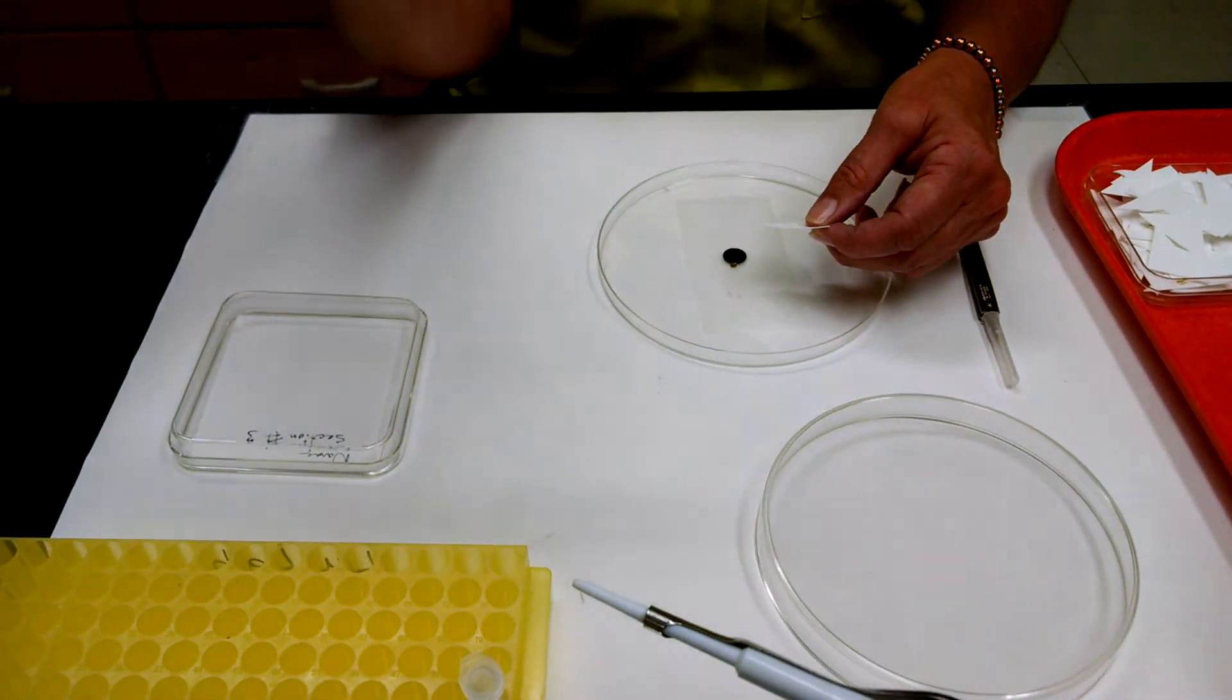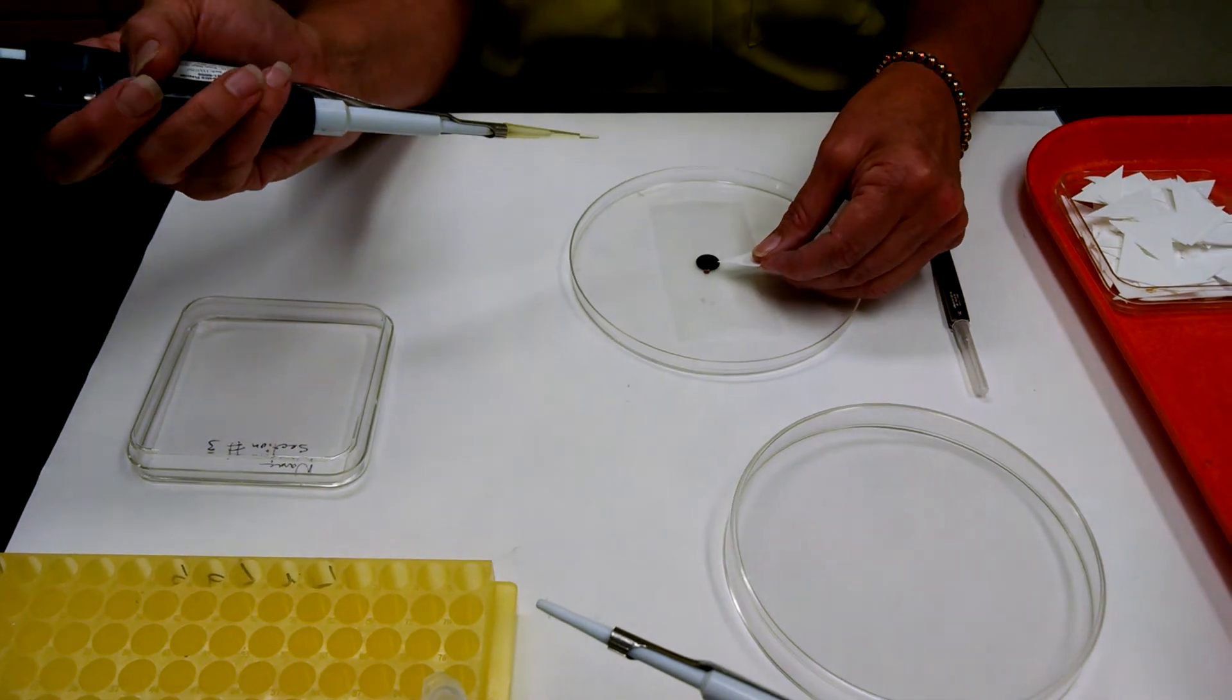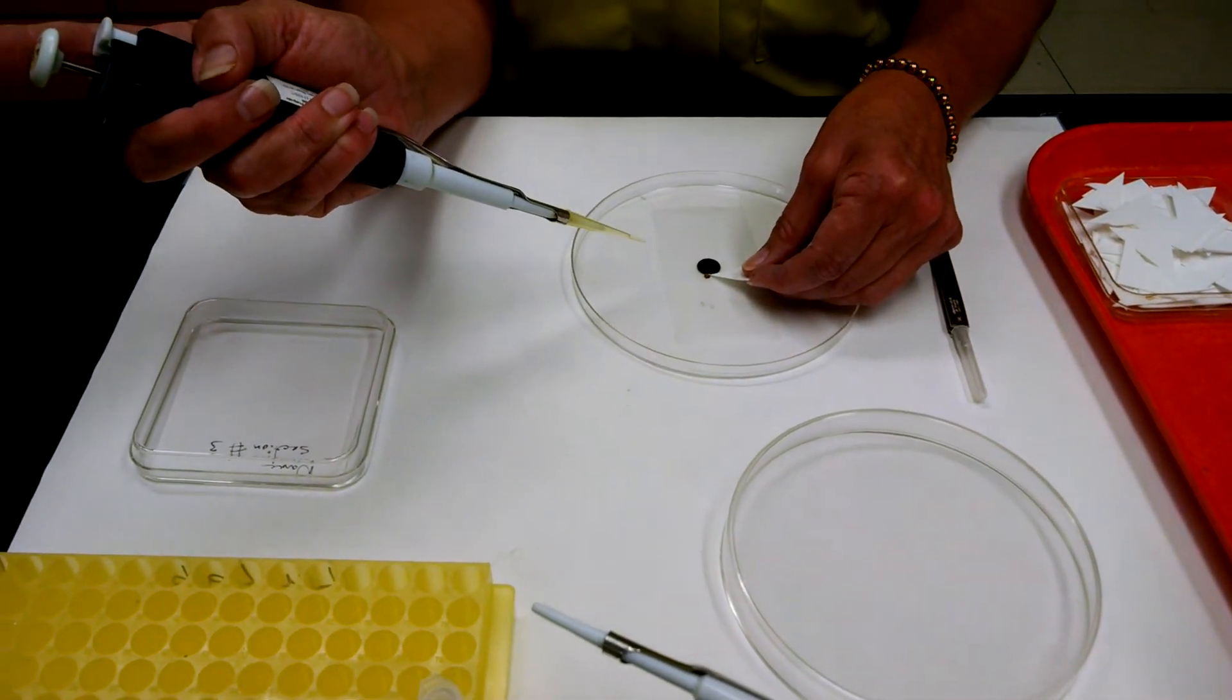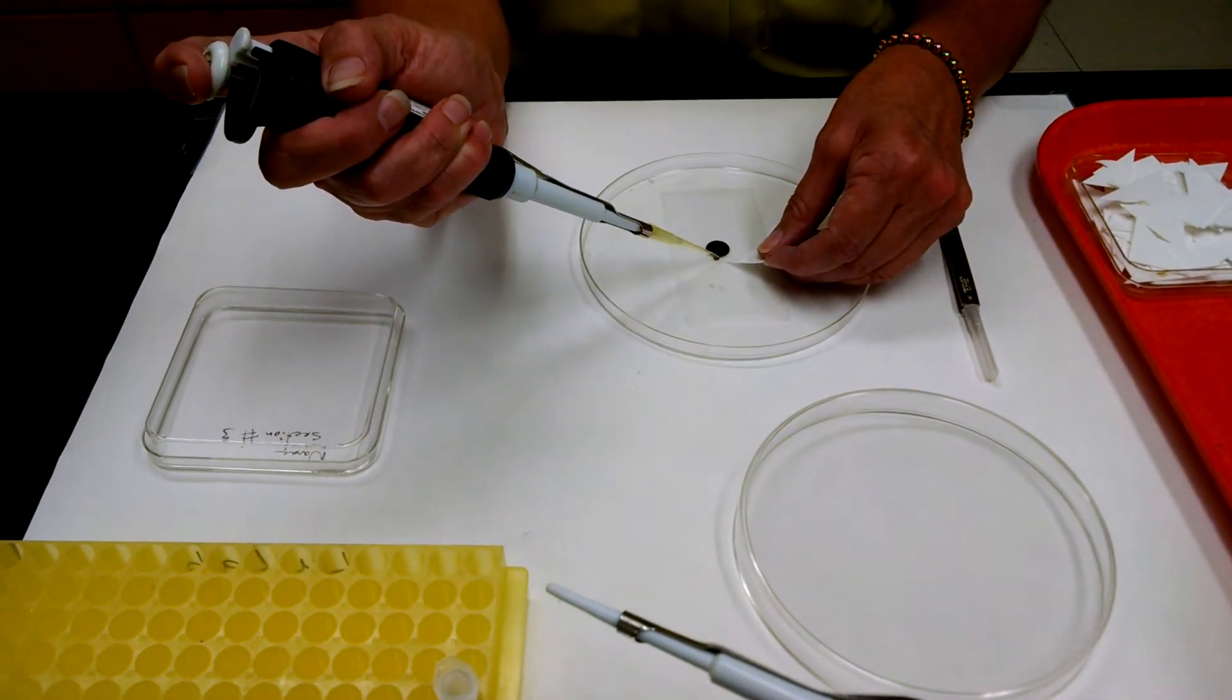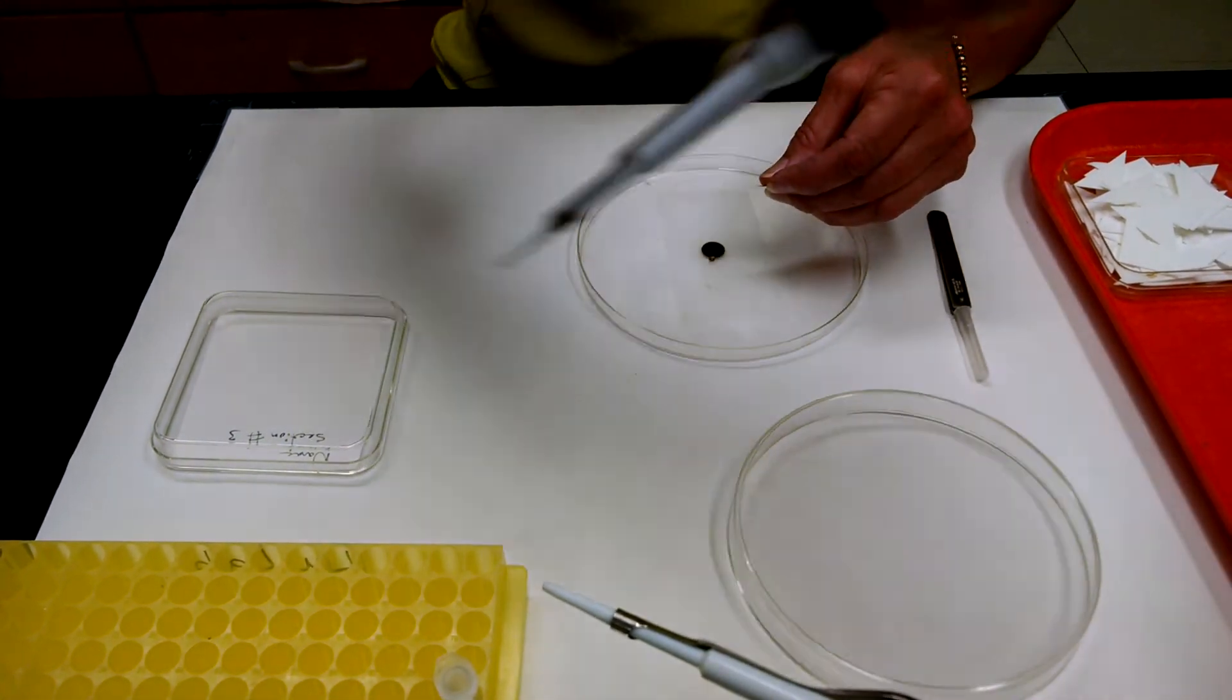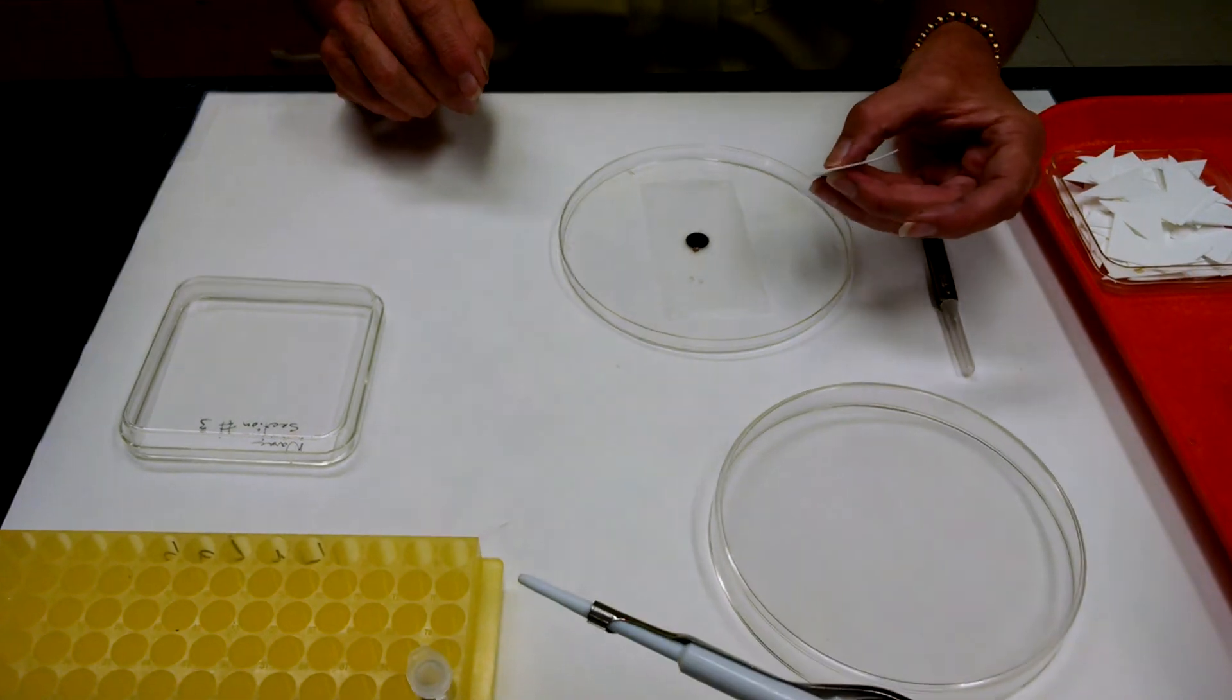I'm going to get my uranyl acetate. I'm going to spin my Whatman paper to another corner. I'm going to touch the grid, remove the wash water and put the uranyl acetate on. Dispose of the tip. We're going to let it sit for two minutes.